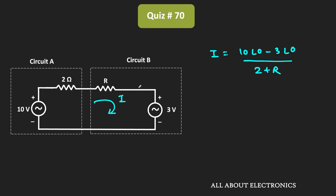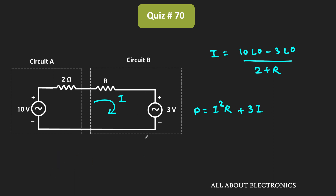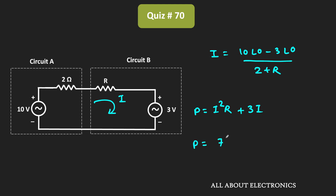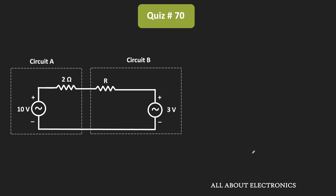The power transferred from circuit A to circuit B is equal to I² × R, which is the power dissipation across resistor R, plus 3 × I, which is the power dissipation across the voltage source. Substituting I = 7/(2+R), we get P = 49R / (2+R)² + 21 / (2+R).